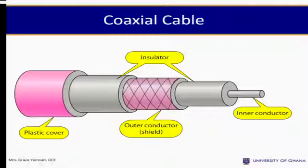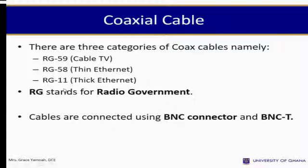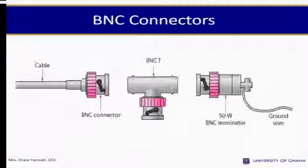There are three categories of coaxial cables. RG59, used for cable TV. RG58, used for thin Ethernet. And RG11, used for thick Ethernet. RG stands for radio government. Cables are connected using BNC connectors and BNC-T connectors.